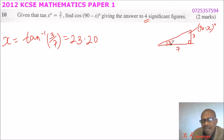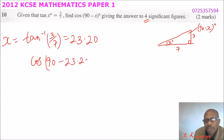So if this angle is 23.20 degrees, it means that to get the cosine of 90 minus x, we subtract x which we have worked out here, 23.20. So you can just use your calculator directly.